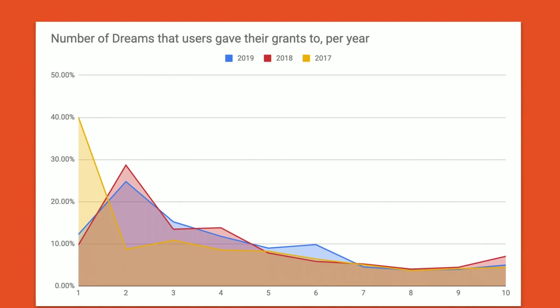Here's one example of applying this design principle. In the first year, 40% of participants gave all their grants to a single dream — probably their own or their camp's. We tried setting a maximum of how many tokens you can give to a single dream, starting at seven. What happened immediately is that it got more spread out; people didn't waste the remaining tokens. We then tried five as the maximum and got pretty much the same result, so we'll stay at a maximum of five.